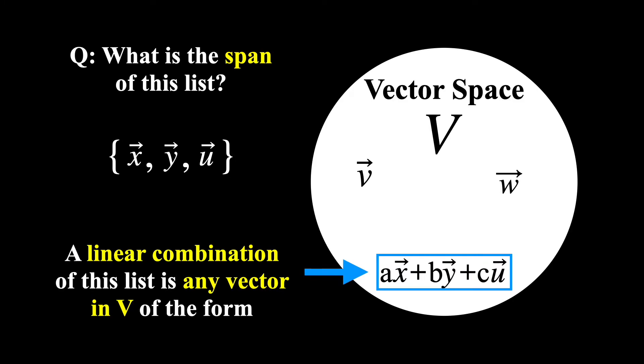And this is exactly what a linear combination of this list of vectors is. It is any vector in the vector space that can be written in this way, as some kind of combination of the vectors in the list.